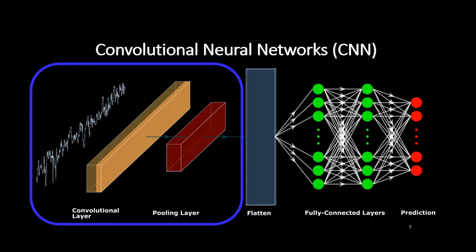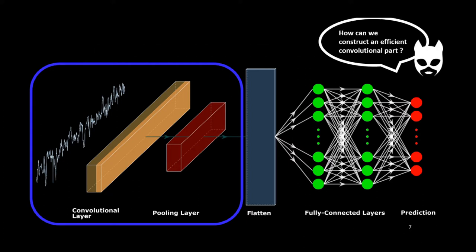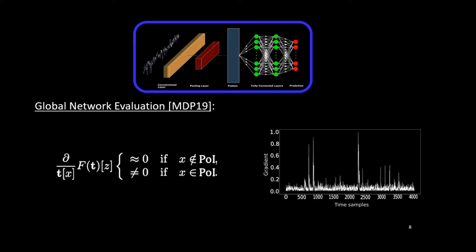In our work, we decide to focus our interest on the convolutional part only, in order to find a good trade-off between the convolutional part complexity and the detection of the point of interest. To construct an efficient convolutional part, one way is to understand how the parameters that compose it impact the feature detection. One solution is to understand and visualize their behavior. In the deep learning side-channel approach, gradient visualization is used as a tool to evaluate the global performance of a network. Unfortunately, these tools cannot be used to independently evaluate the convolutional and the classification part.